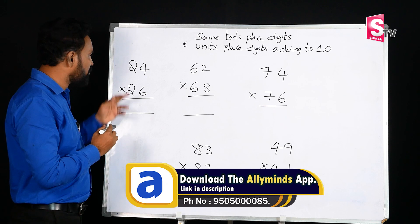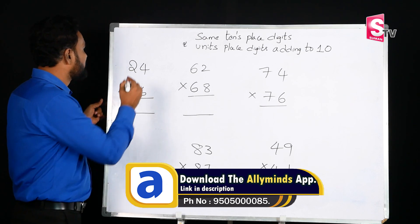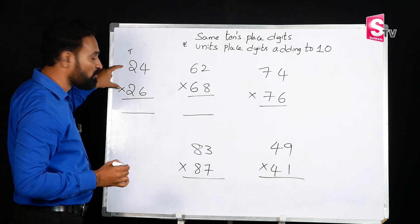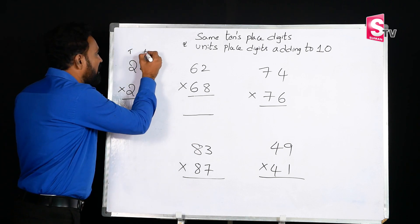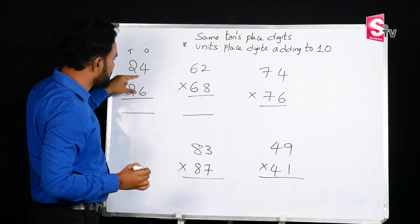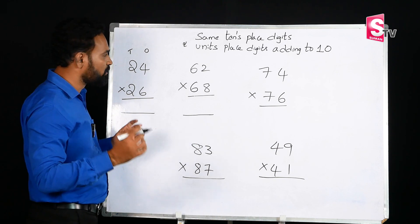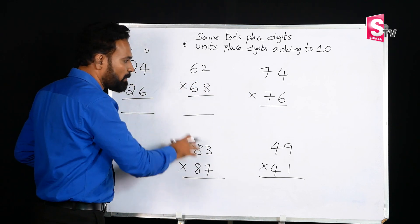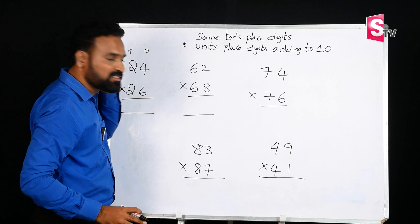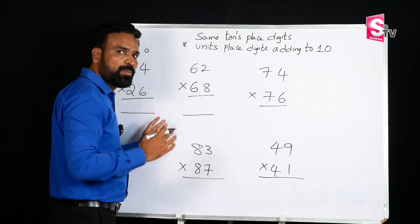Take these two double-digit numbers, 24 and 26. The tens-place digits are the same — both are 2. The unit-place digits, 4 and 6, sum to 10. Every problem we'll look at follows this rule: the tens-place digits are the same.